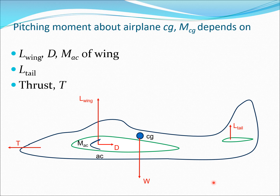Let us look at the aircraft and some of the forces and moments which act on it. A typical aircraft has the wing and the horizontal tail. The wing produces a lift and a drag. The horizontal tail largely produces lift; the drag there is very small and we are going to neglect that. There is the CG of the aircraft — the weight acts at the CG — and there is a moment at the wing given by MAC, acting at the aerodynamic center of the wing section. There is also a thrust acting forward. We take the moment about the CG to help trim the aircraft. Since the weight acts at the CG, it does not take part in the moment calculation, but all the remaining forces are important for the moment.